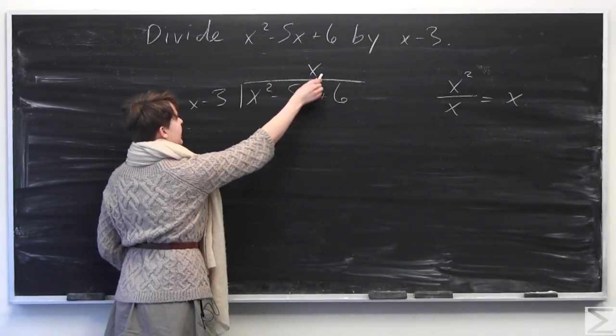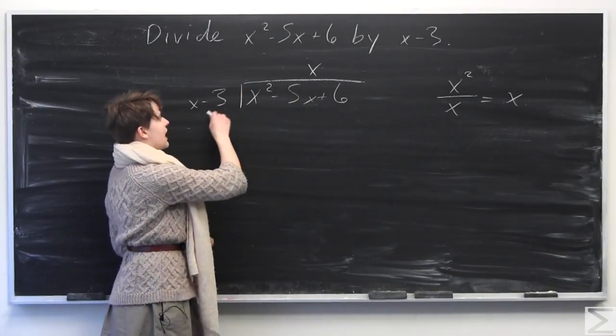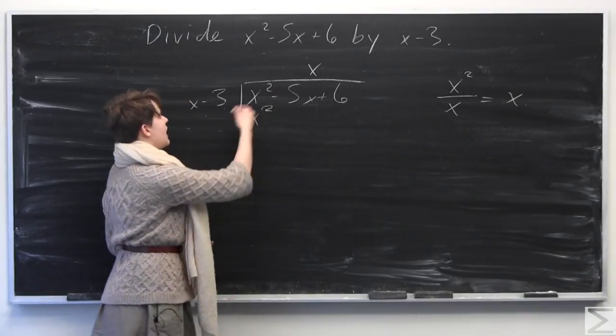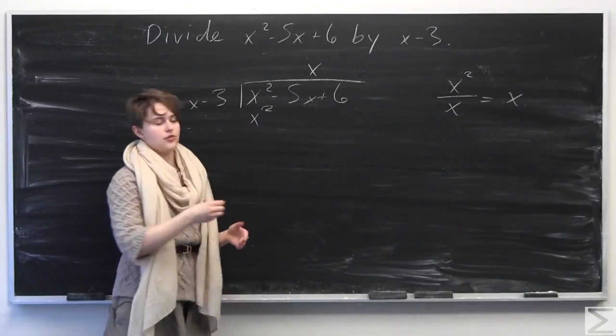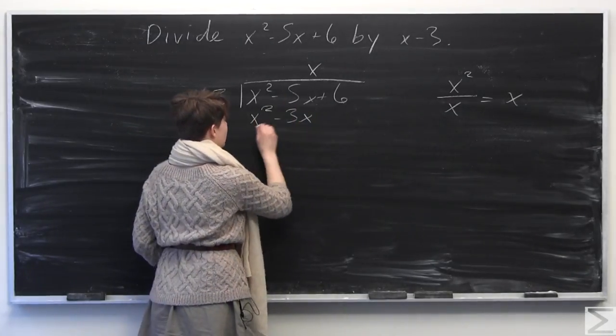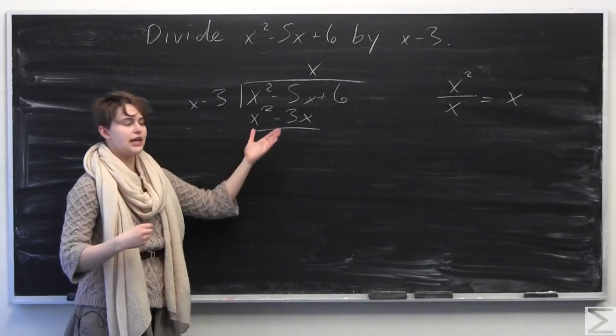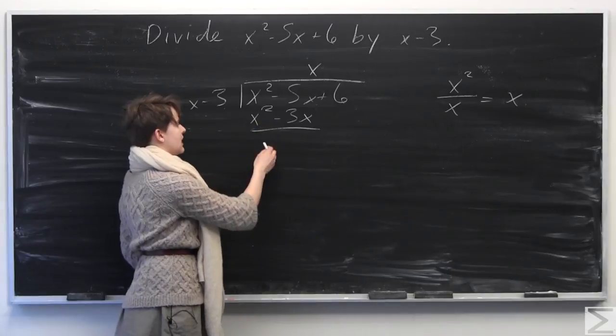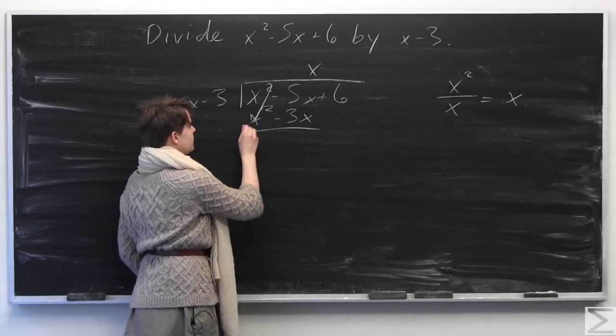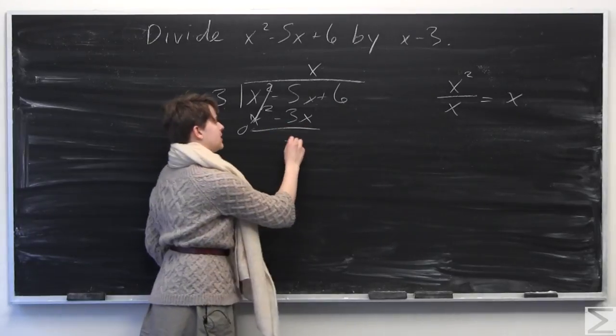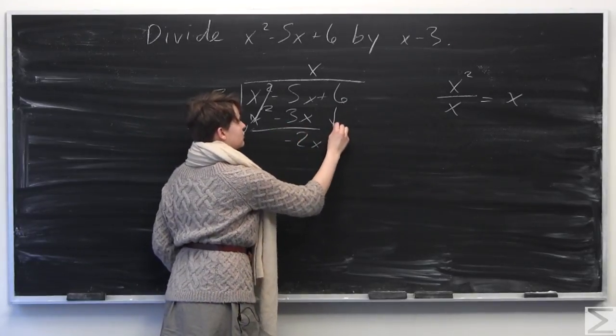We distribute x over x and minus 3, so x times x is x squared and x times negative 3 is negative 3x. We subtract everything so the signs reverse. x squared minus x squared is 0, and negative 5x minus negative 3x is negative 2x. Then we drop down the plus 6.